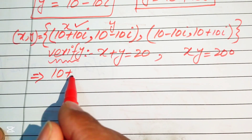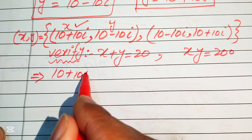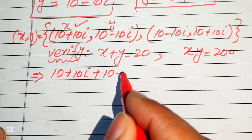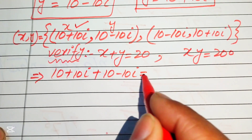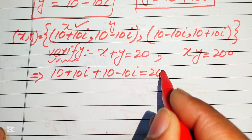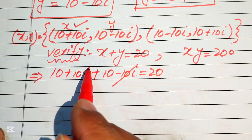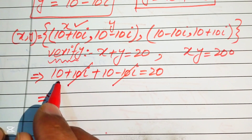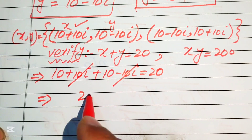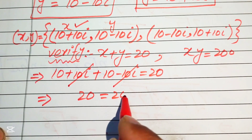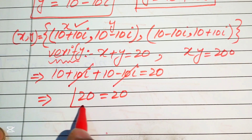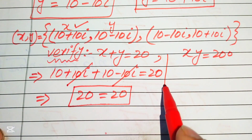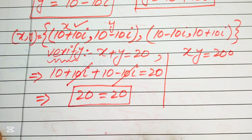Substituting the first solution into equation one: (10 plus 10 iota) plus (10 minus 10 iota) equals 20. The plus 10 iota and minus 10 iota cancel, and 10 plus 10 equals 20, which equals 20. This confirms that x and y satisfy the first equation.